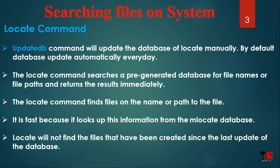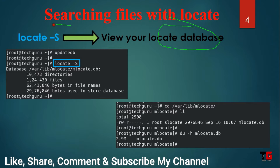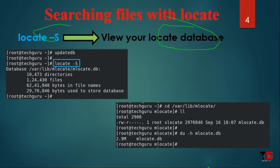The locate command will not find files that have been created since the last update of the database. That means for every creation or deletion of a file you must update the database before you can search. For example, to search the database stats you type the command 'locate -s'. But first you have to update the database using the updatedb command, then you can find the location of the database.